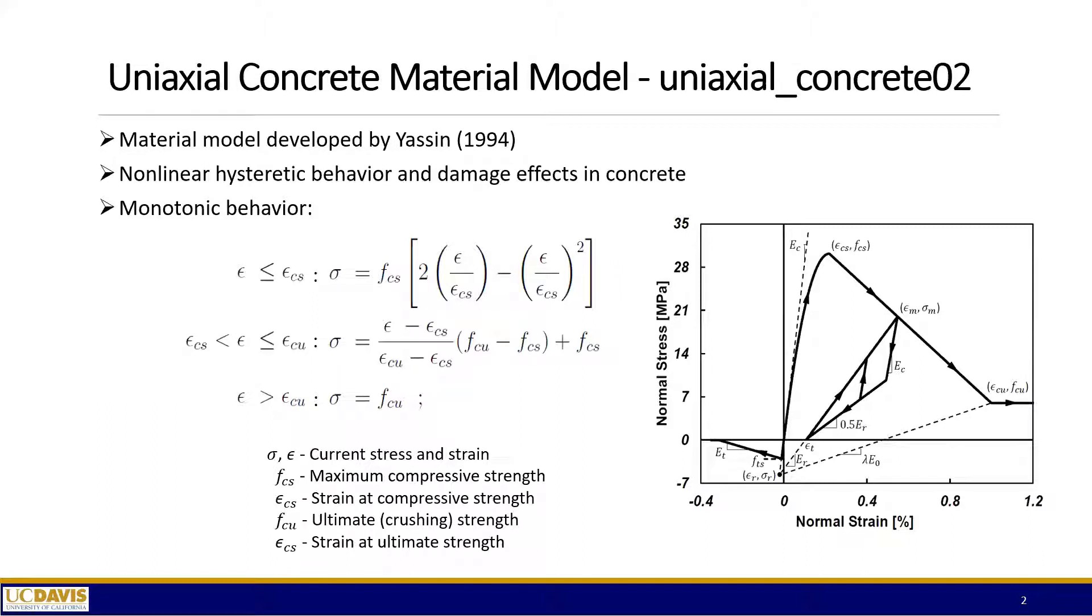So again, we have talked about this uniaxial concrete material model in our earlier videos. The keyword in Real-ESSI is the uniaxial concrete 02 material. This is the same material model also used in OpenSees. So if you have done this calibration or used this material model before, you can use the exact same set of parameters here in Real-ESSI as well.